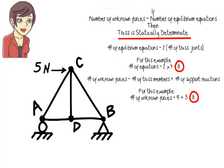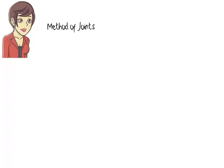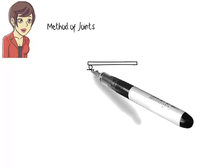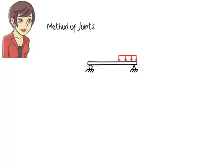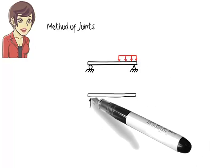How do we analyze such a truss? How do we calculate the axial force in each member? There are several truss analysis techniques. Here, we are going to explain and illustrate a technique called the method of joints. This technique is a direct application of the principle of static equilibrium. According to the principle, if a structure is in equilibrium, then not only must the equilibrium equations be satisfied for the structure as a whole, but they also must be satisfied for any of its parts.